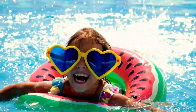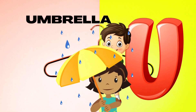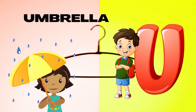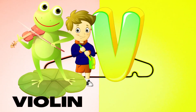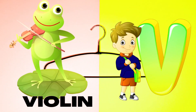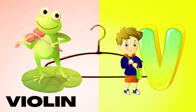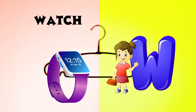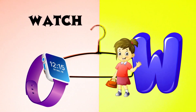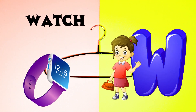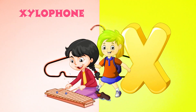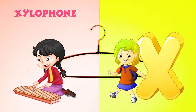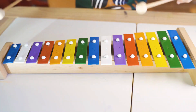U is for Umbrella, U-U-Umbrella. V is for Violin, V-V-Violin. W is for Watch, W-W-Watch. X is for Xylophone, X-X-Xylophone.